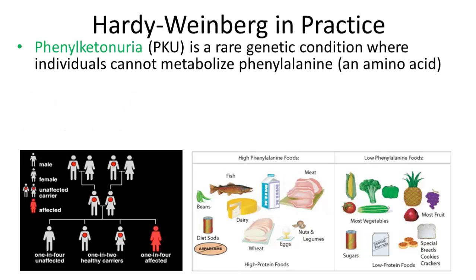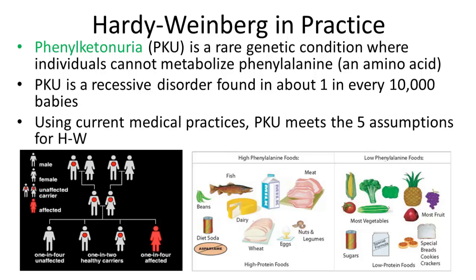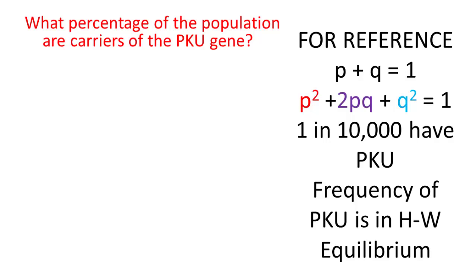Here's a practice problem. Phenylketonuria is a rare genetic condition where individuals cannot metabolize the amino acid phenylalanine, which is found in a lot of dairy and meat products. It's a recessive disorder found in about one in every 10,000 people that are born. Under current medical practices, it meets the five assumptions for Hardy-Weinberg equilibrium. We can then determine the percentage of the population that are carriers based on the assumption that it's in Hardy-Weinberg equilibrium.